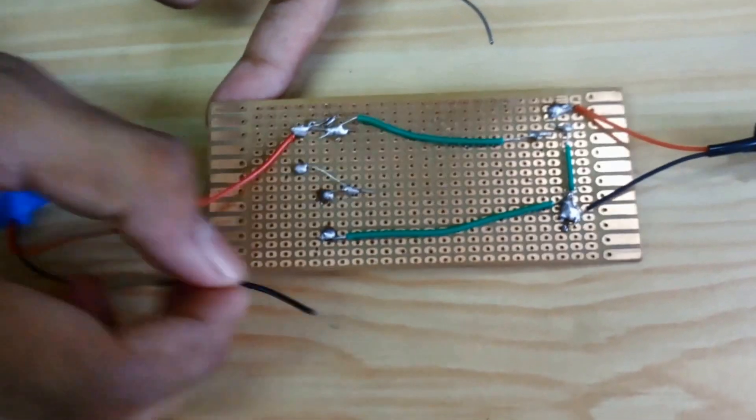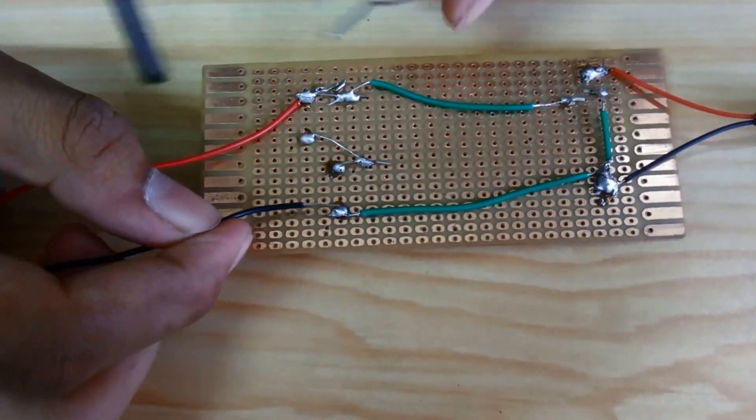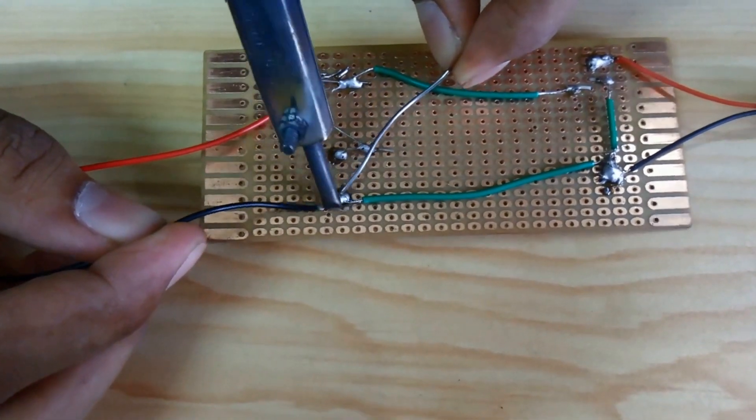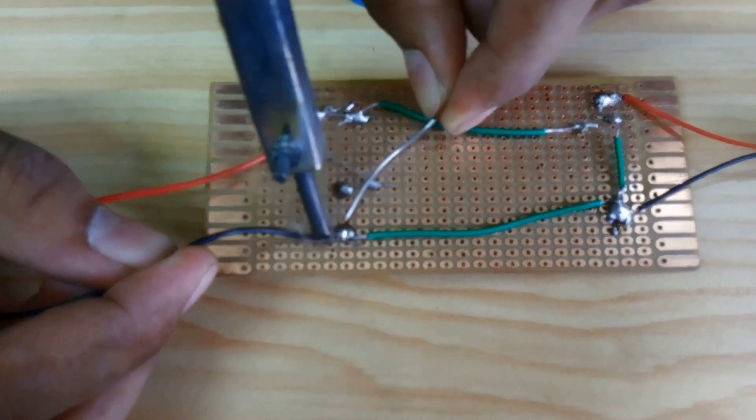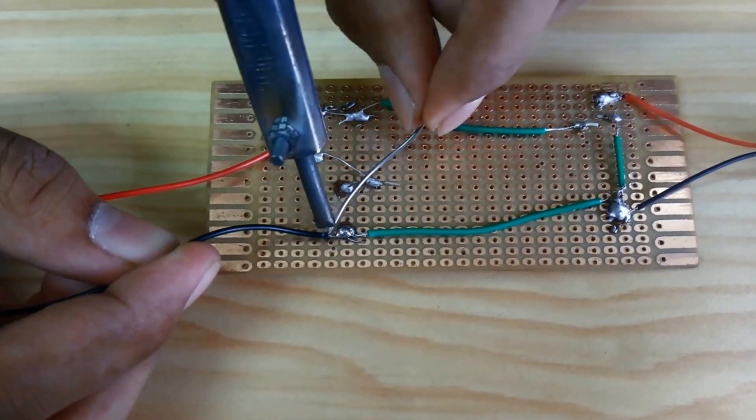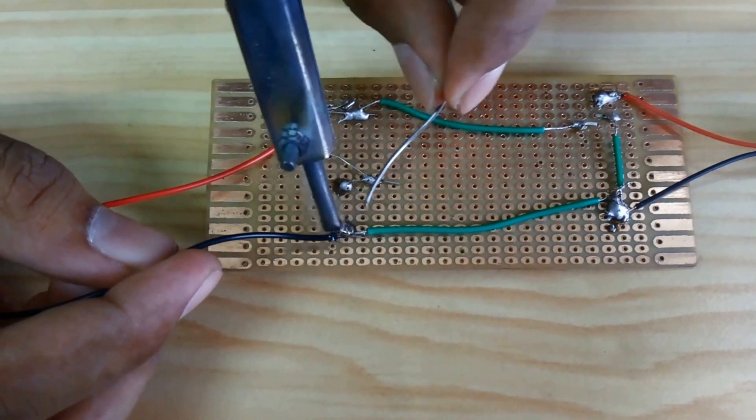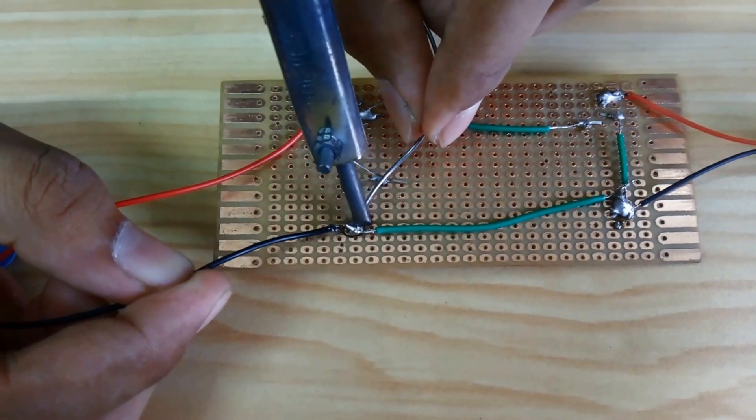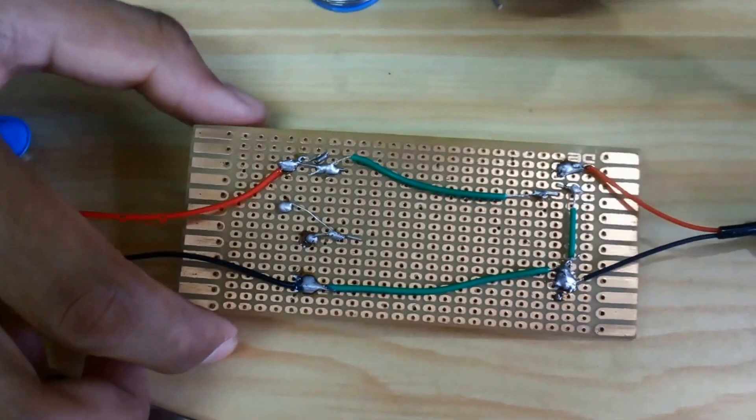The black wire will be connected with this negative end. Now it's fine.